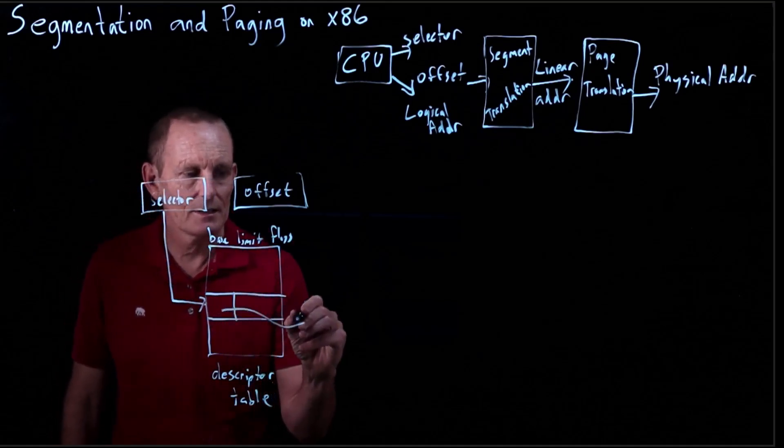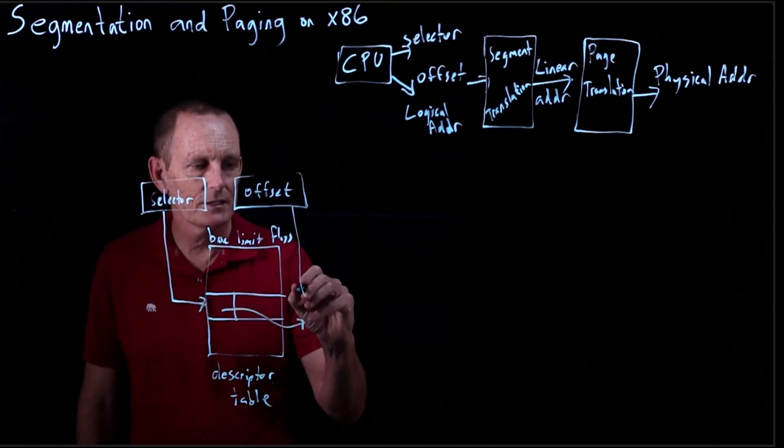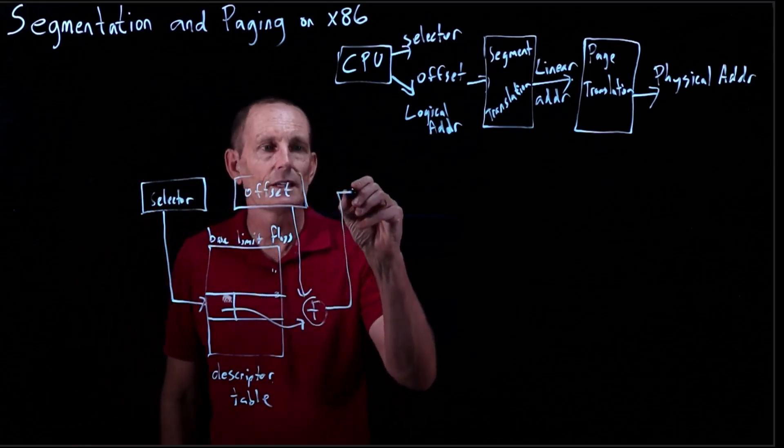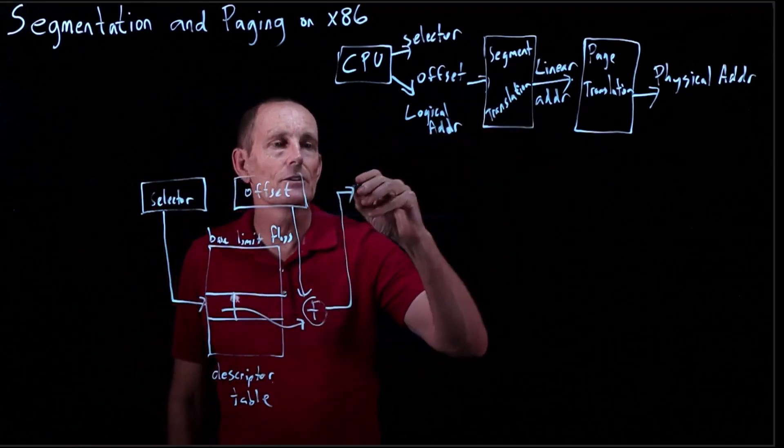So we'll take this base and we'll take this offset and we'll add them together. And what does that give us? That gives us a linear address.